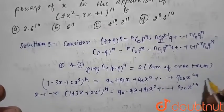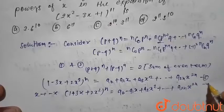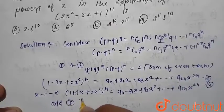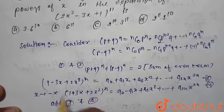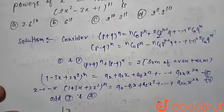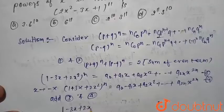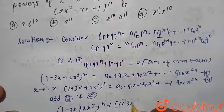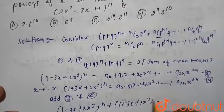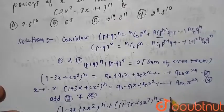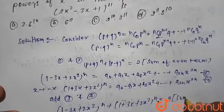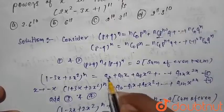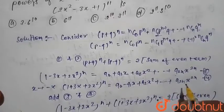If we add equations 3 and 4, we obtain: (1 − 3x + 2x²)^n + (1 + 3x + 2x²)^n = 2 times the sum of even terms, that is a0, a2, ..., a2n.